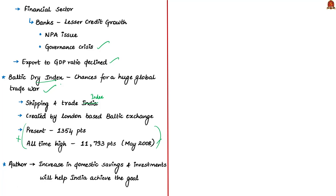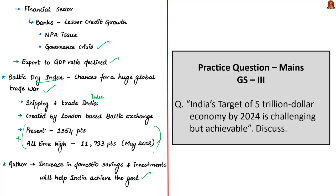Finally, the author insists that only an increase in domestic savings and investments will help India become a $5 trillion economy. Along with this, the author suggests that policymakers have to do a practical and realistic assessment, and not blindly believe that FDI inflows will help India achieve the target. With this, we come to the end of the analysis of this editorial.